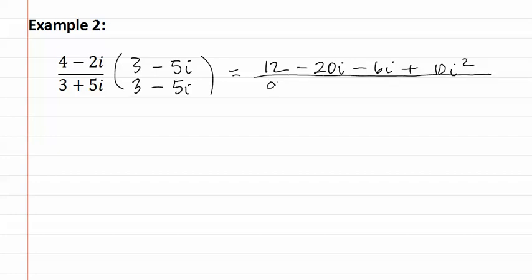And in the denominator, we get nine minus fifteen i plus fifteen i minus twenty-five i squared.